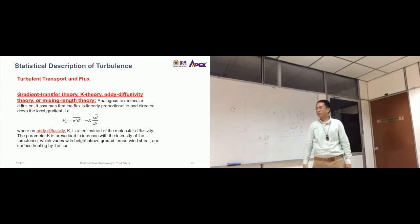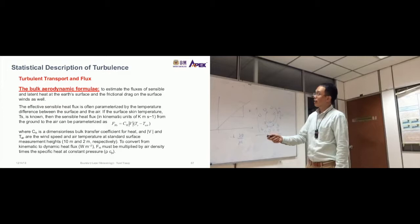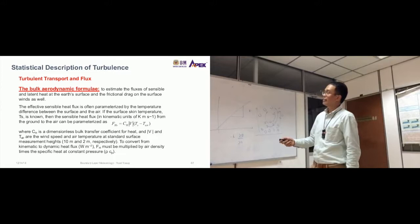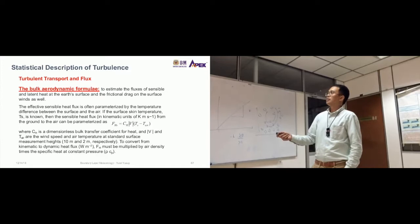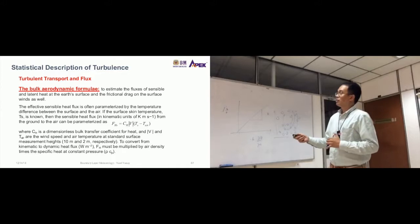So this is another term, but similar to that just now. It's called the bulk aerodynamic formula. Same thing as just now. This bulk aerodynamic formula is used to estimate the fluxes of sensible and latent heat at the Earth's surface and the frictional drag on the surface winds as well. So we can do two ways—we can use the eddy covariance way, the direct method, or we can use this bulk method. So that's why it's similar to the one just now.